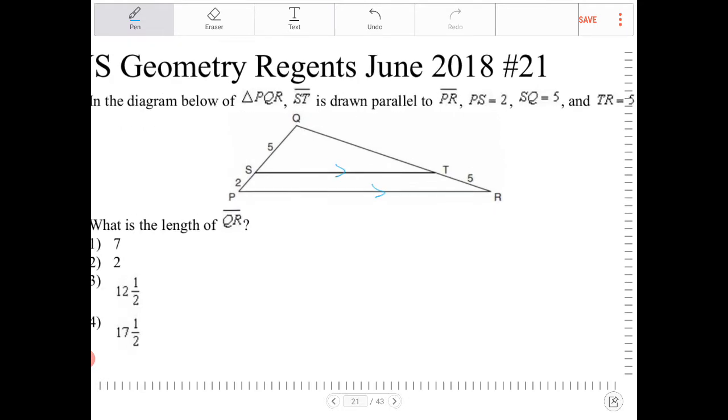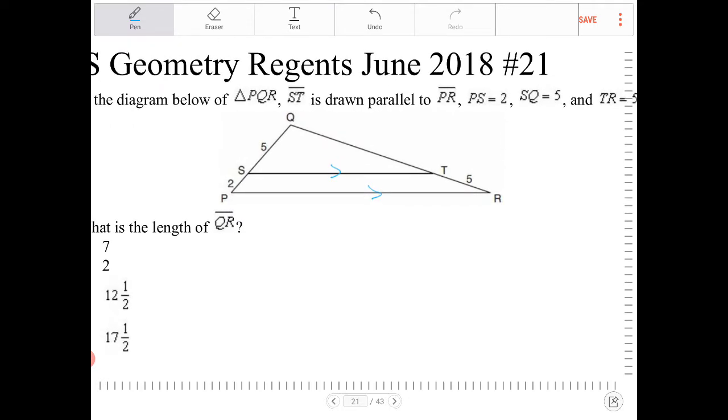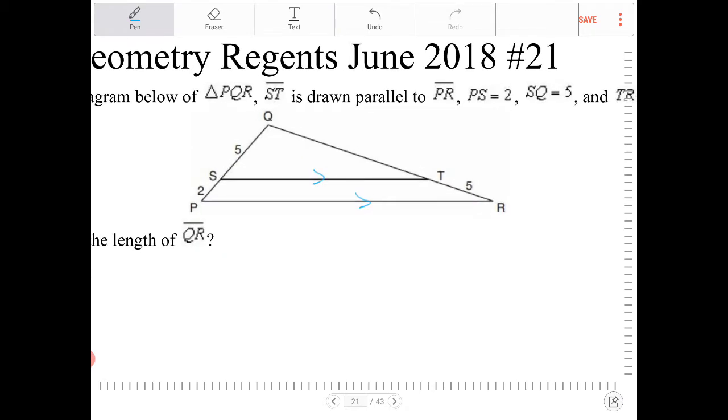So why is that important? Well, by telling us that these two lines are parallel, we now have an understanding that these corresponding angles are going to be congruent, as well as these corresponding angles.